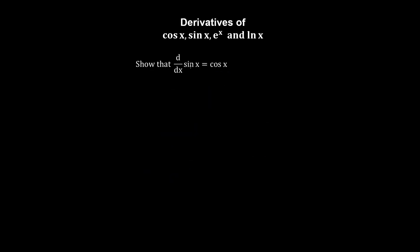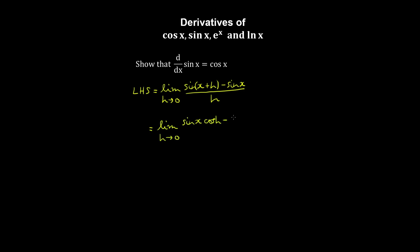Let's prove the derivative of sine x — another elementary derivative that we'll remember. Using the definition of the derivative, and now using the addition trig identity, we can simplify the first term as follows. And now we can do some factorization to split these limits into two.